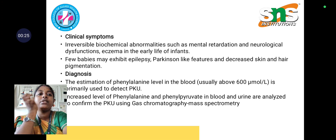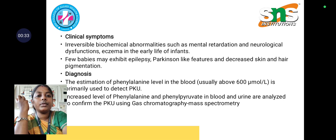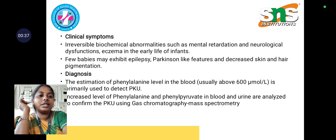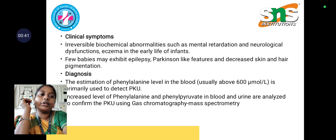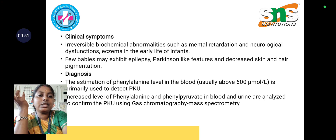Other symptoms include Parkinson-like features and decreased hair and skin pigmentation, which appears as white color. For diagnosis, estimation of phenylalanine level in the blood — usually above 600 micromoles per litre — is primarily used to identify phenylketonuria, where increased levels of phenylalanine and phenylpyruvate in blood and urine are analyzed.